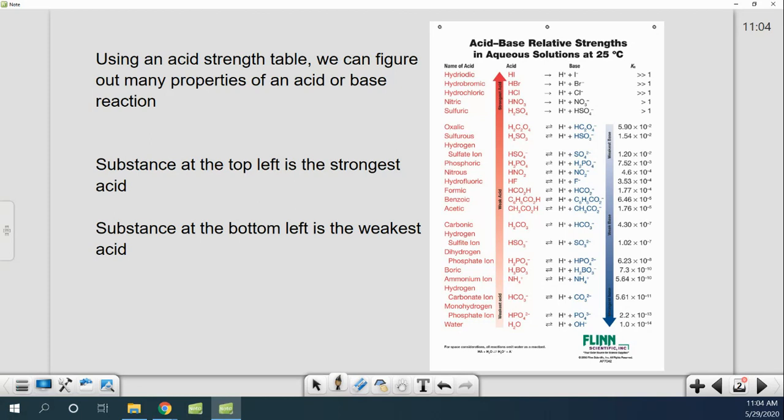So using an acid strength table, you can figure out many properties of acid or base reactions. So this is an example of an acid base table right here. You've got a different one in your handouts there, but any of them will basically work. Anything at the top left are your strongest acids. And if you're at the bottom left, these would be your weakest acids. And so you can see that it not only gives you acid, it also gives you, well, this would actually probably say conjugate base.